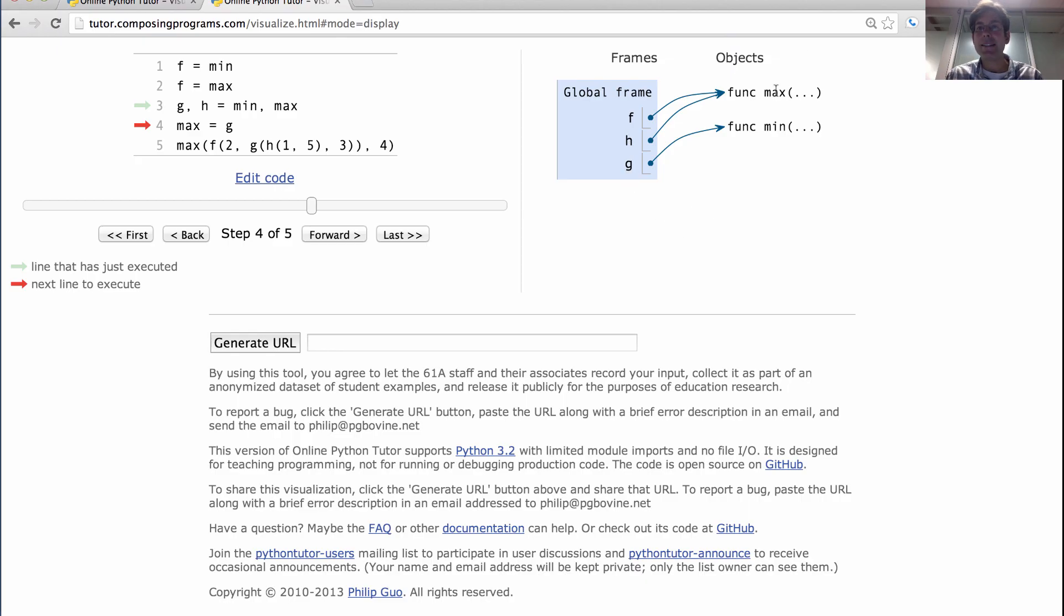Now there's also the name max for the max function and the name min for the min function. Those are built in and they're part of the global frame. But we don't write them down because if we had to write down all the built in names, then that would take up too much space. So we only write them down when they change, which is about to be what happens. So we next say max equals g. Using the execution rule for assignment statements, we first evaluate g. G evaluates to the min function. Then we bind the name max to that value. So now max means min. Jeepers! That is complicated, isn't it?